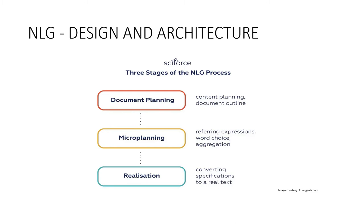In the attempts to mimic human speech, NLG systems use different methods and tricks to adapt their writing style, tone, and structure according to the audience, context, and purpose of the narrative. In 2000, Reiter and Dale proposed a pipelined NLG architecture distinguishing three stages in the NLG process: Document Planning — deciding what is to be said and creating an abstract document outlining the structure of the information to be presented; Micro Planning — generation of referring expressions, word choice, and aggregation to flesh out the document specifications; and Realization — converting the abstract document specifications to real text using domain knowledge about syntax, morphology, etc.